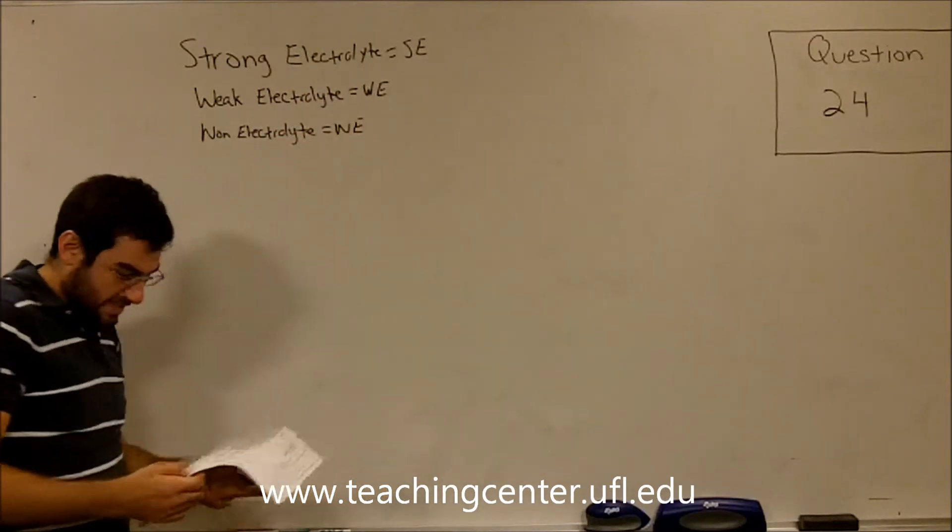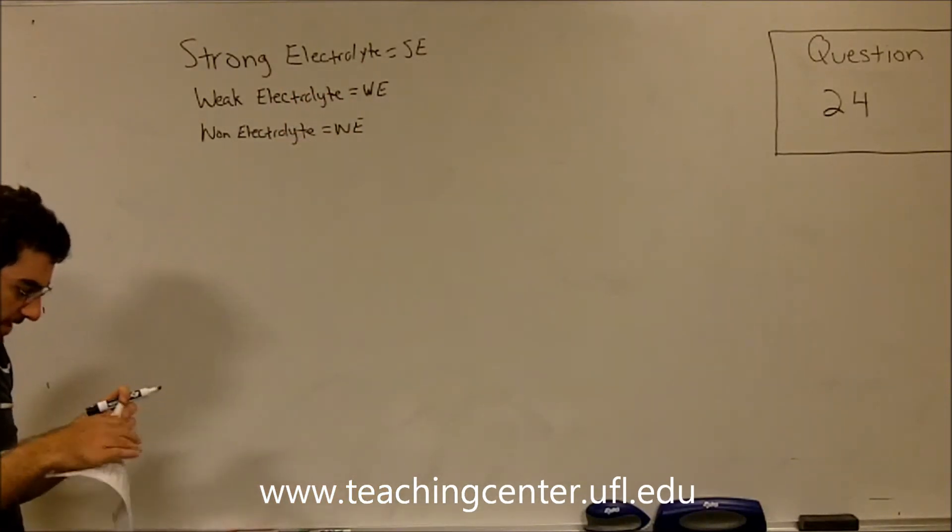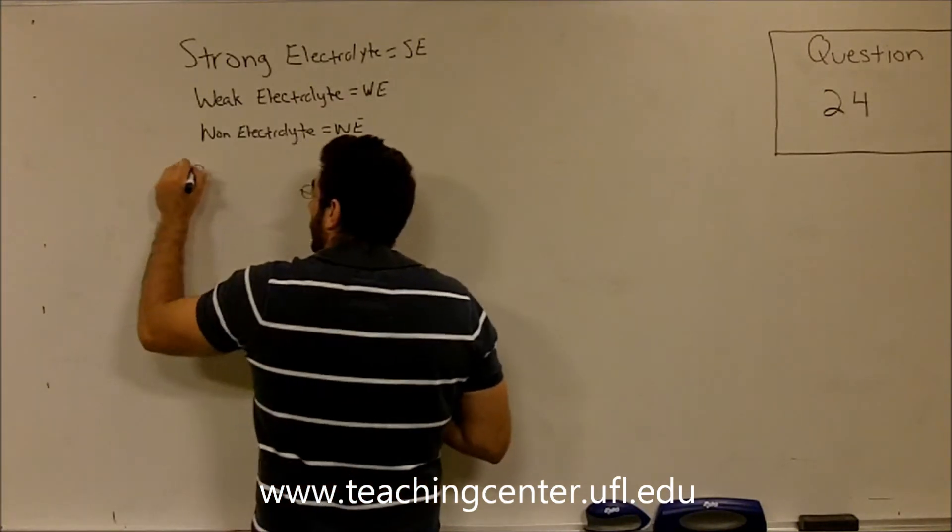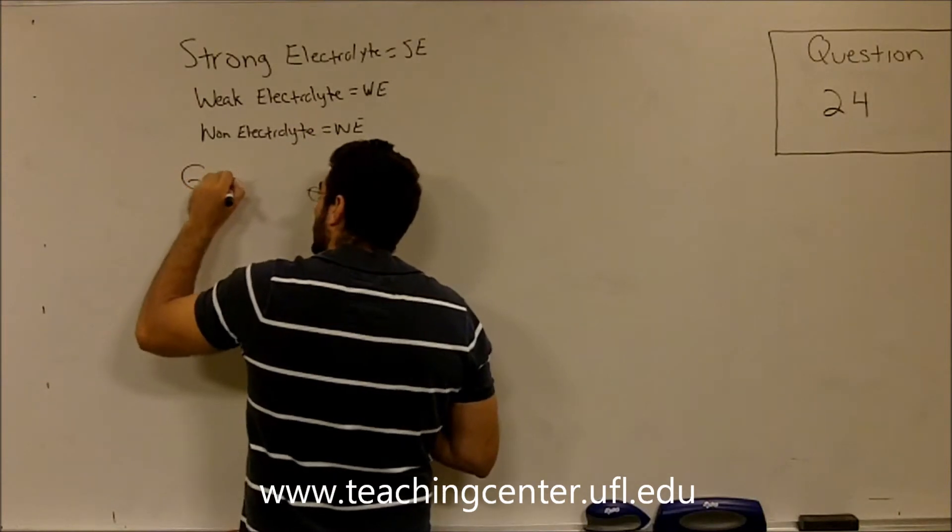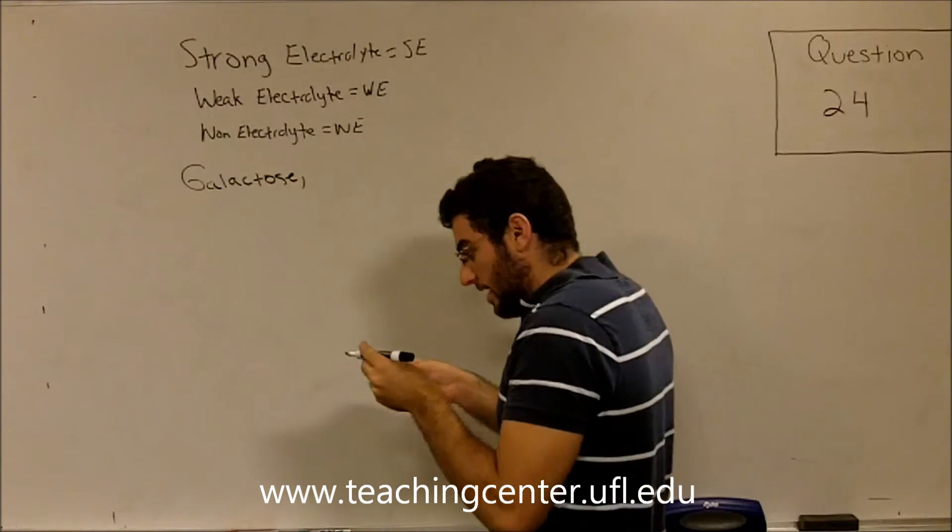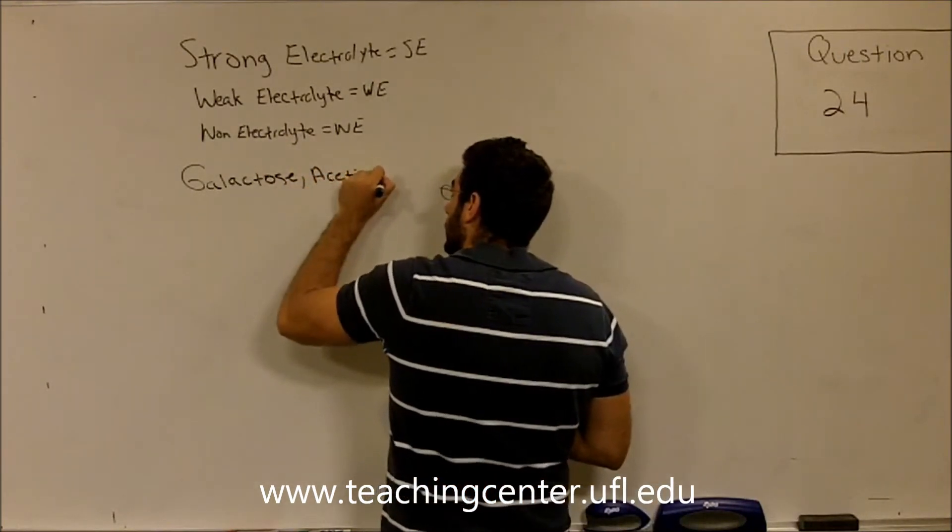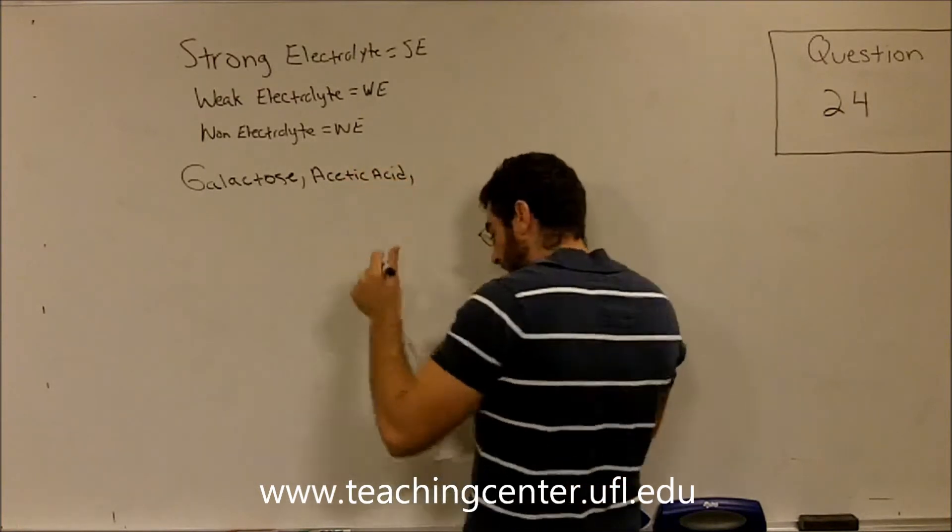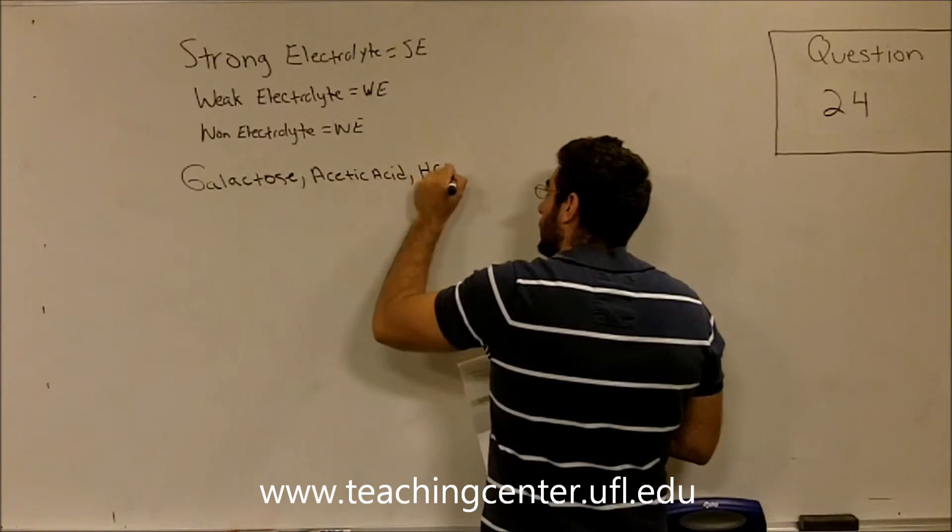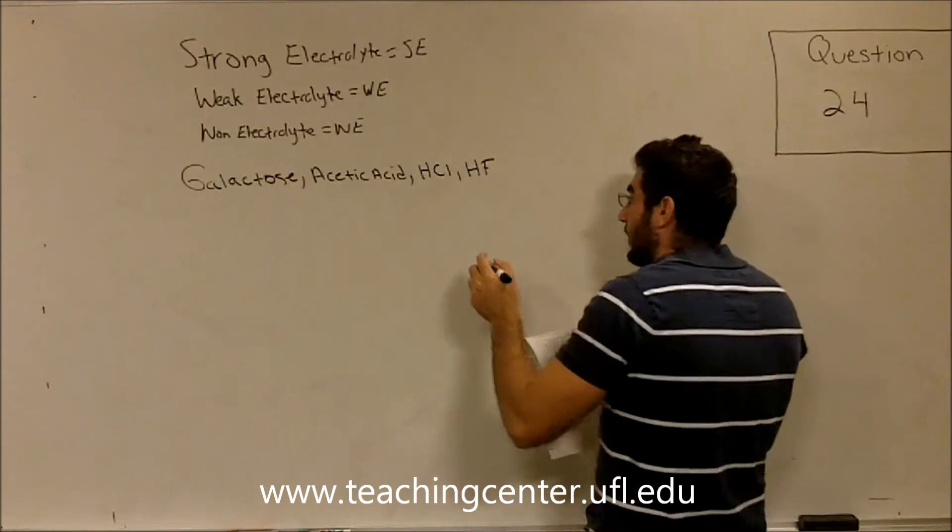and non-electrolytes. So it gives us different compounds, and it wants us to classify the following as strong electrolytes, weak electrolytes, or non-electrolytes. It gives us galactose, acetic acid, hydrochloric acid, and ammonium nitrate.